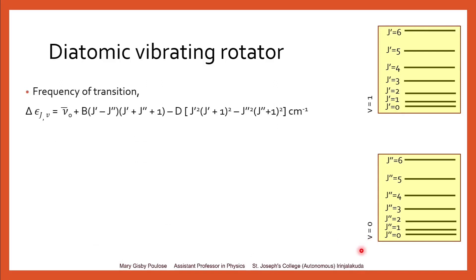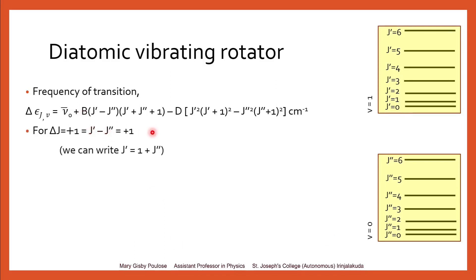Now let us calculate the frequency of transition using this expression. For ΔJ = +1, this means j′ − j″ = +1, so we substitute all j′ terms as (1 + j″). We have only given the selection rule for vibrational energy Δv = +1; now we apply the selection rule for rotational energy, ΔJ = +1, which implies the upper energy level minus lower energy level equals +1.